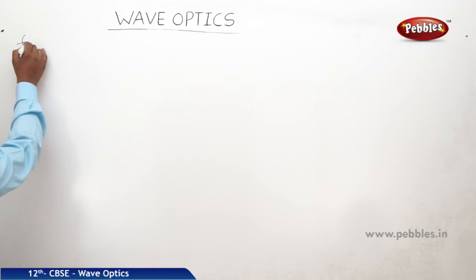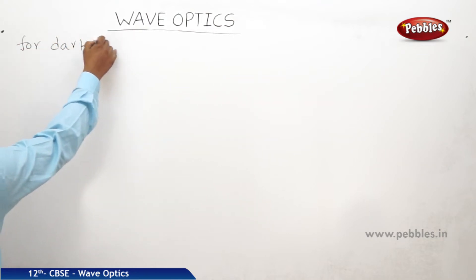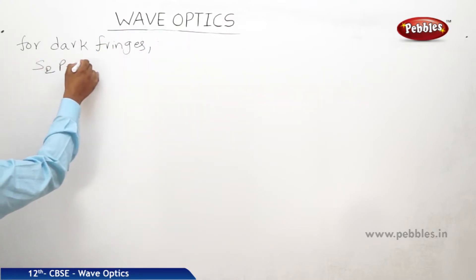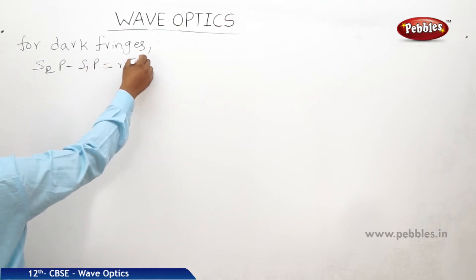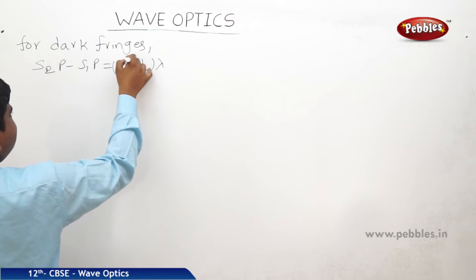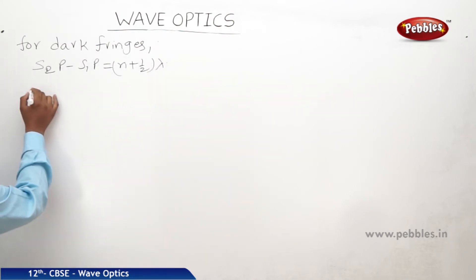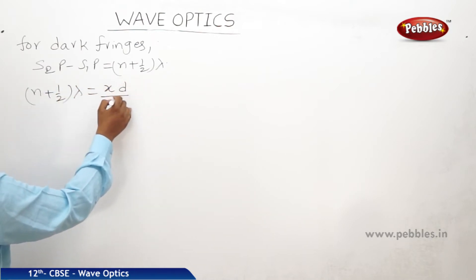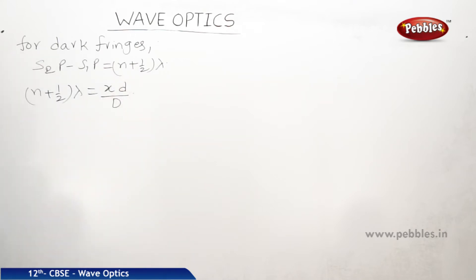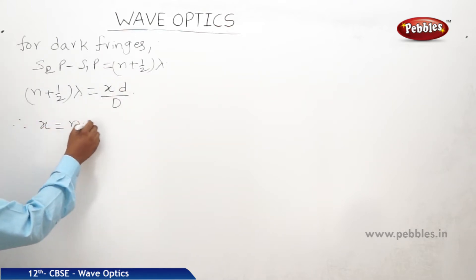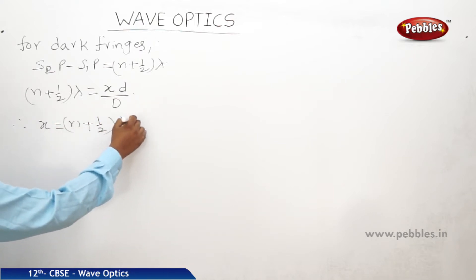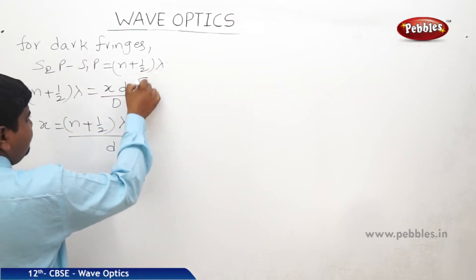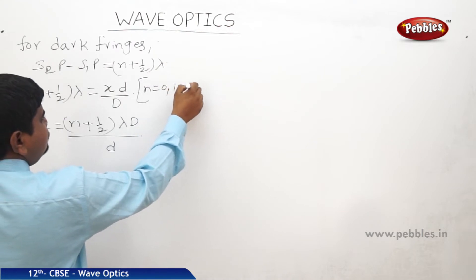For dark fringes, we know that s2p minus s1p is equal to n plus one-half into lambda. Therefore n plus one-half into lambda is equal to xd by D. From this we get x is equal to n plus one-half into capital lambda D by small d, where n values are 0, 1, 2, and so on.